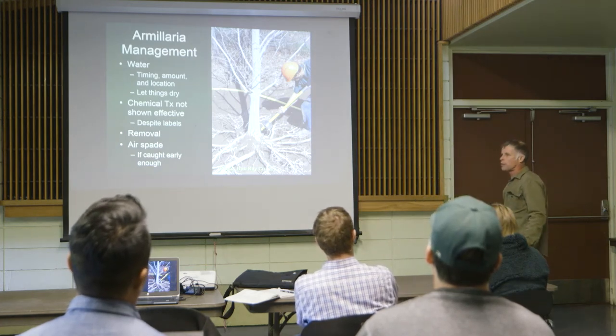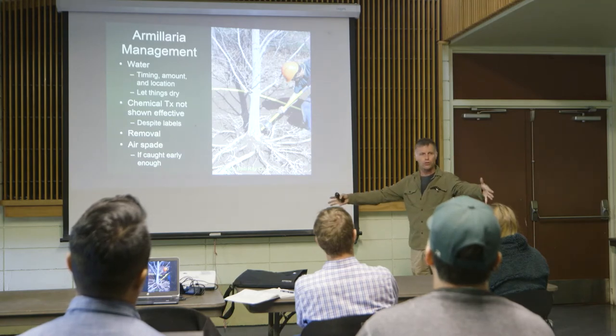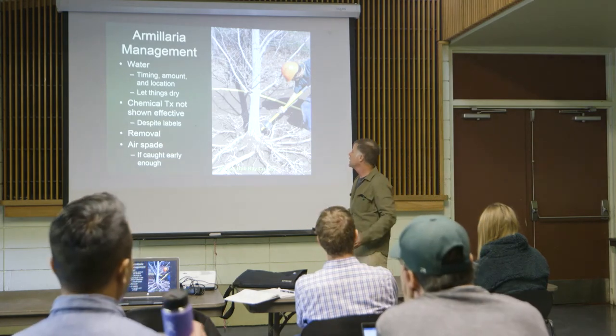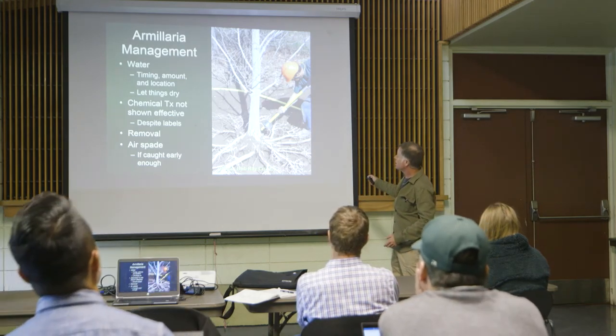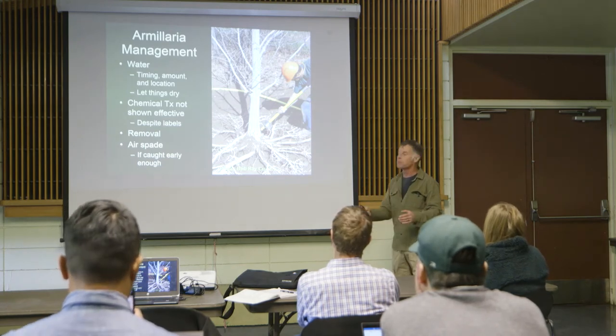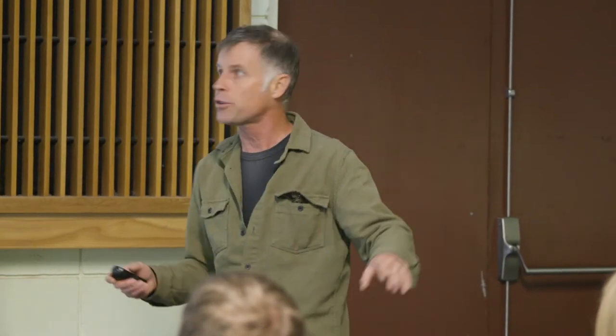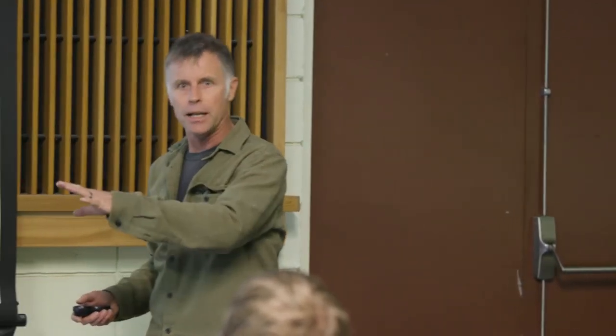Air spading involves a giant air compressor — usually towed behind a truck — with a big hose and solid nozzle. You need goggles and plywood barriers around the area. You're blowing soil out from underneath the tree to a depth of about six to eight inches. This technique preserves roots down to about an eighth of an inch in diameter. It's a bit like stripping every leaf off the tree because you're stripping every root hair off, but it's not as bad as doing nothing and letting armillaria come back in.